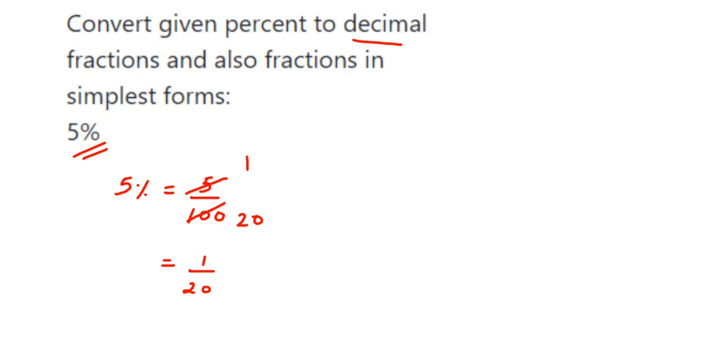Now for 5%, from 1 upon 20, from here itself you can get the answer. Divide 1 by 20 and you will get the answer in decimal. That is one way of doing it. Or you can convert from here also: 5% means 5 upon 100.